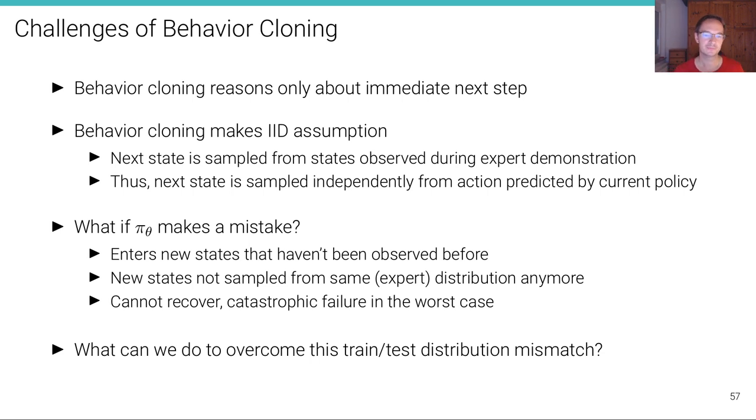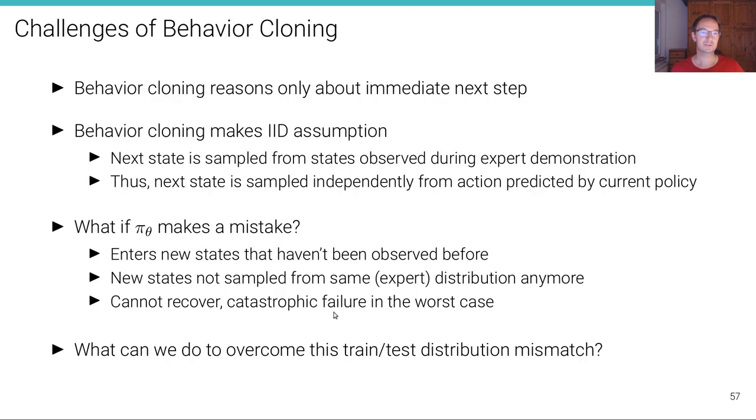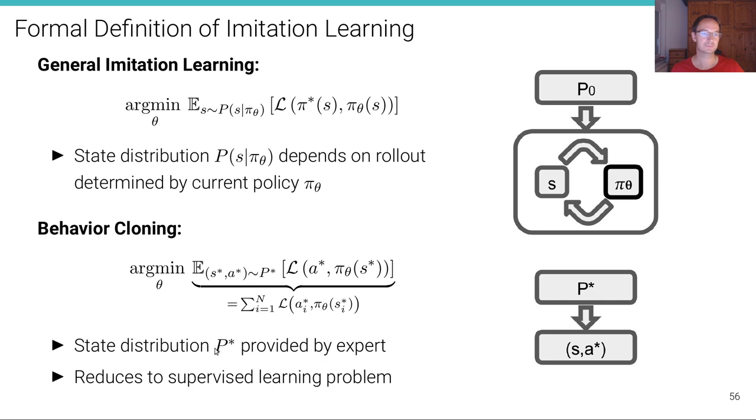What can we do to overcome this trained test distribution mismatch? One of the most popular techniques to overcome that is called Dagger, data aggregation. And it's a technique that also has some quite nice theoretical properties. Has been proposed by Ross et al., AISTATS 2011. The idea here is to do something in between these two. This one here is very costly. Because we need to always be able to query the expert during training. At any step of training. But this one here doesn't work either. Because we assume IID data. Which is not the case.